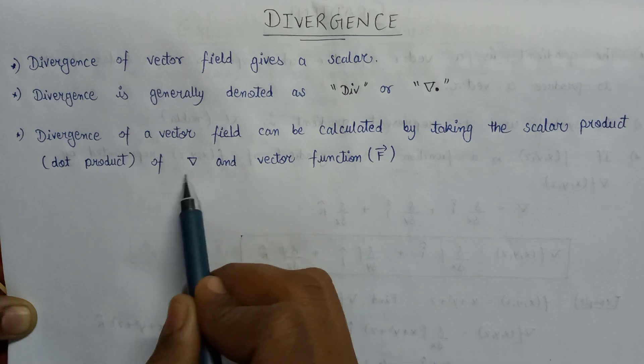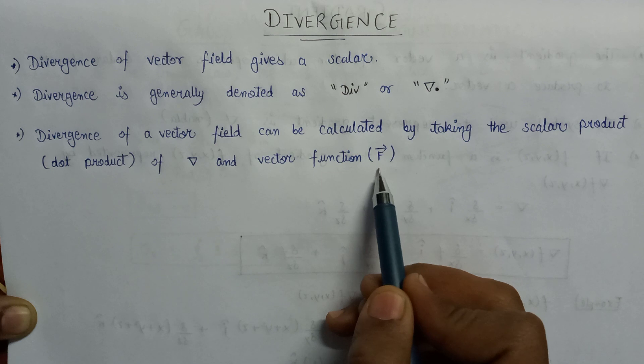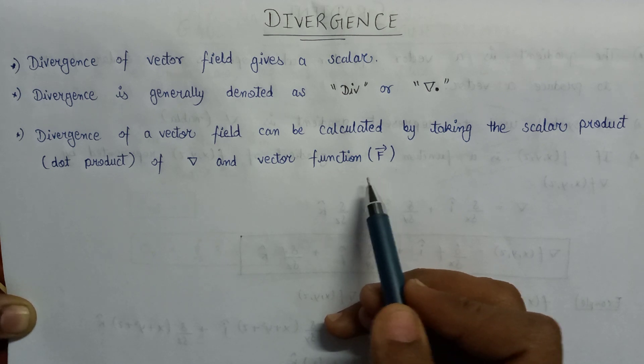The divergence of the vector field or the vector function can be calculated by taking the scalar product or the dot product of the del as well as our vector function, that is f vector.